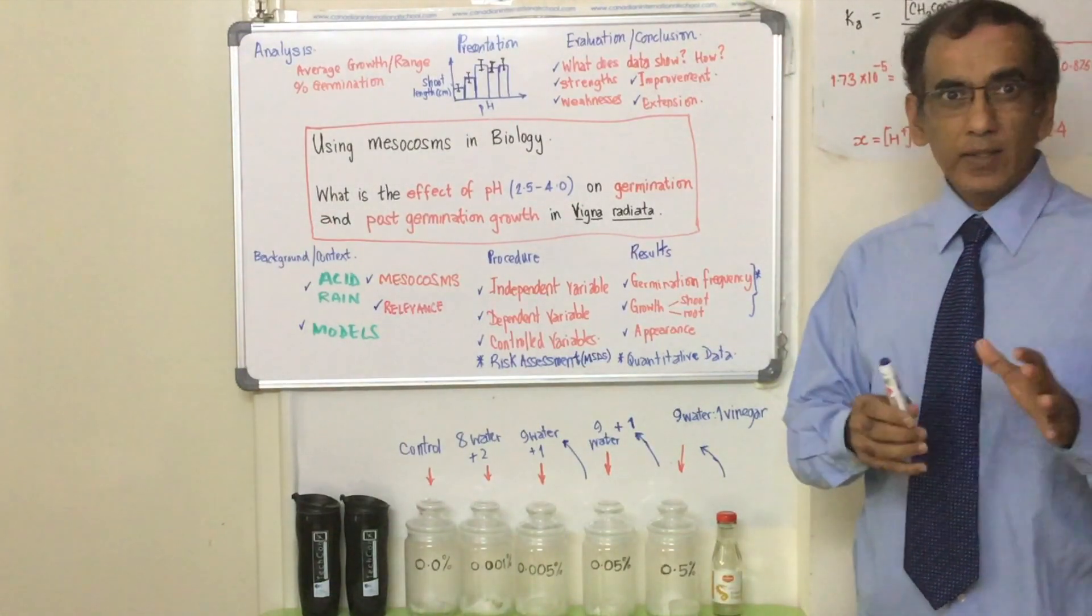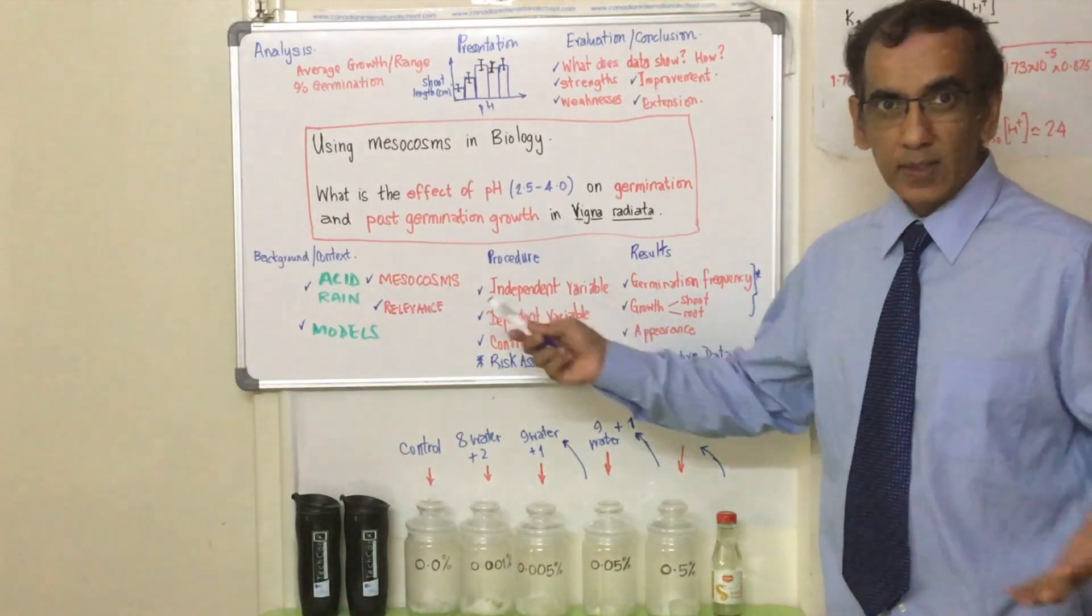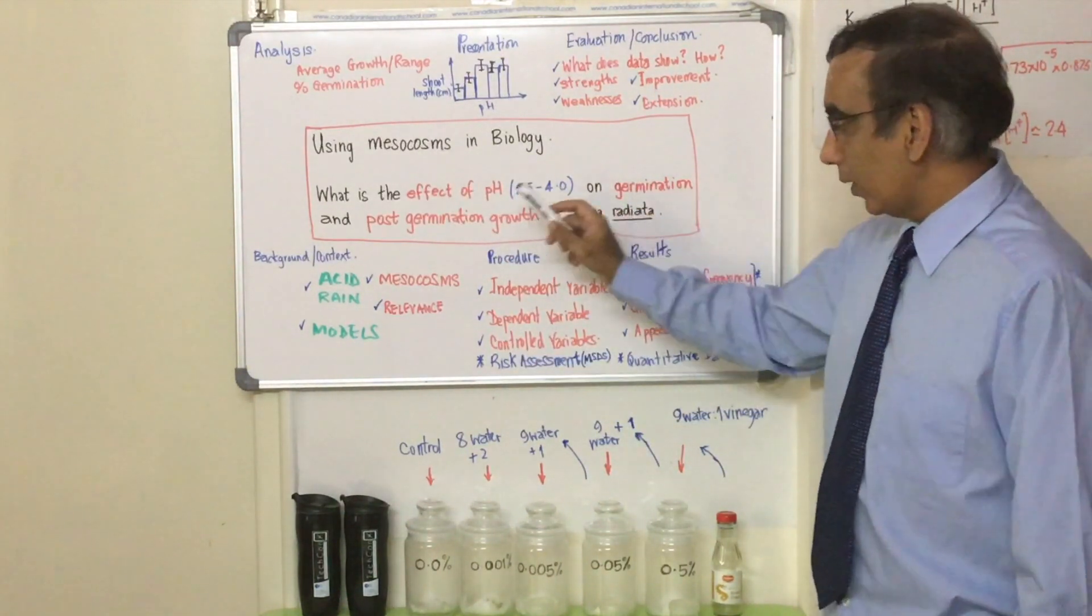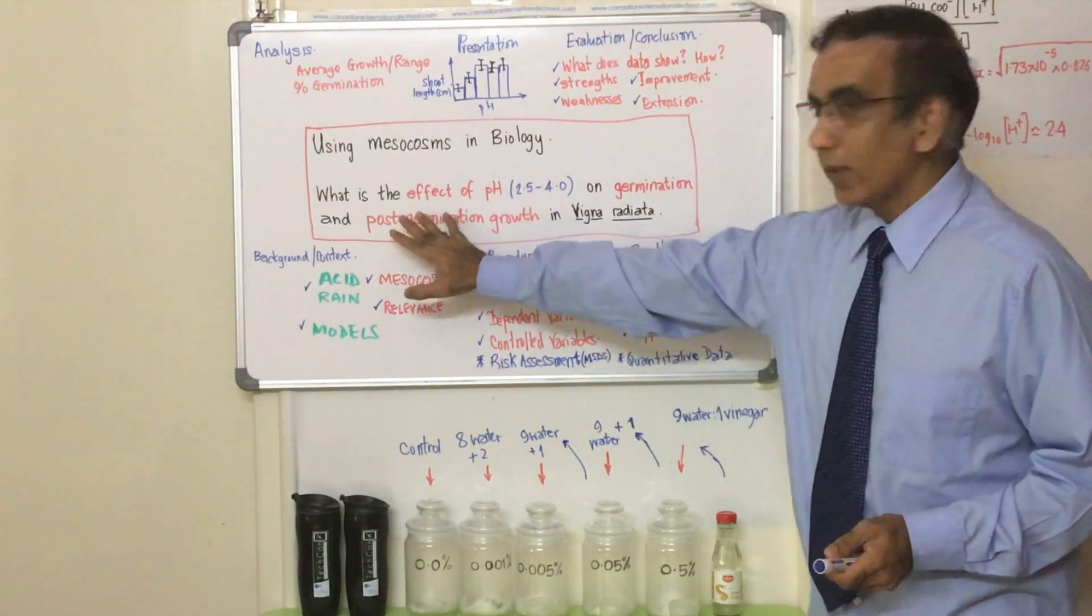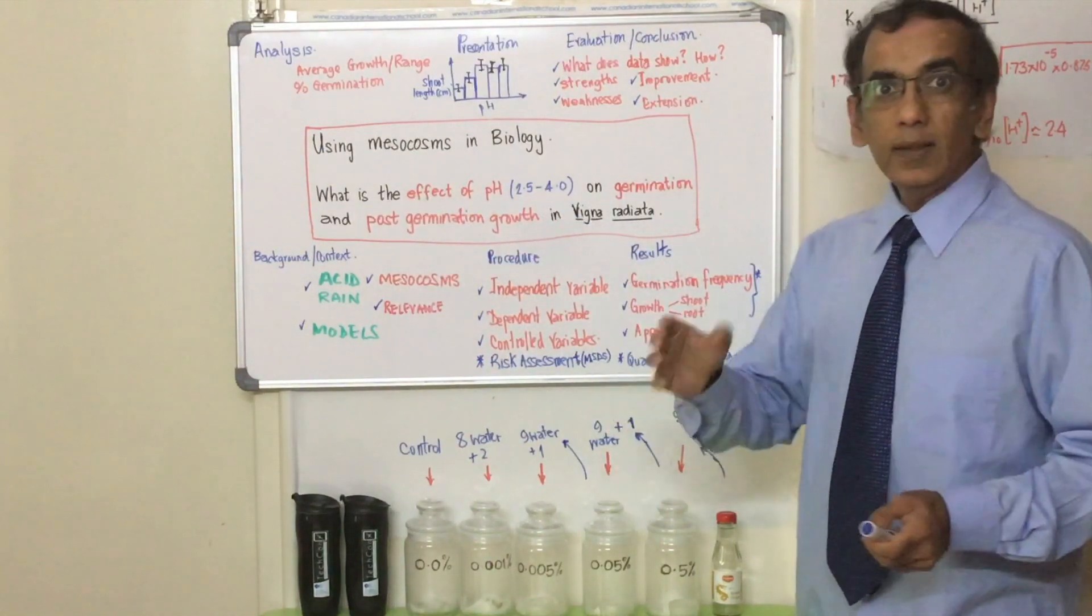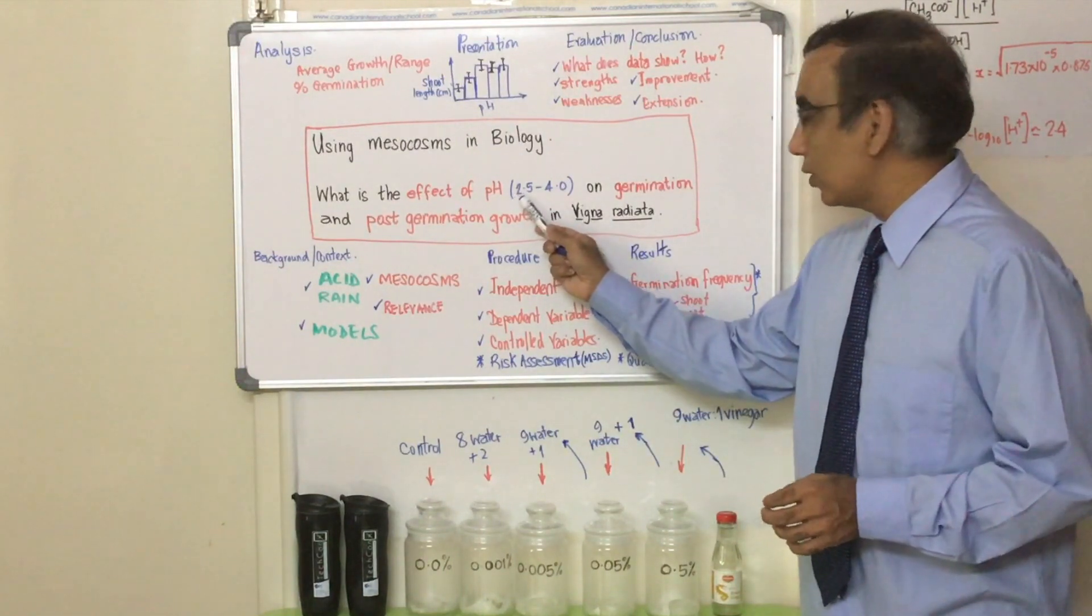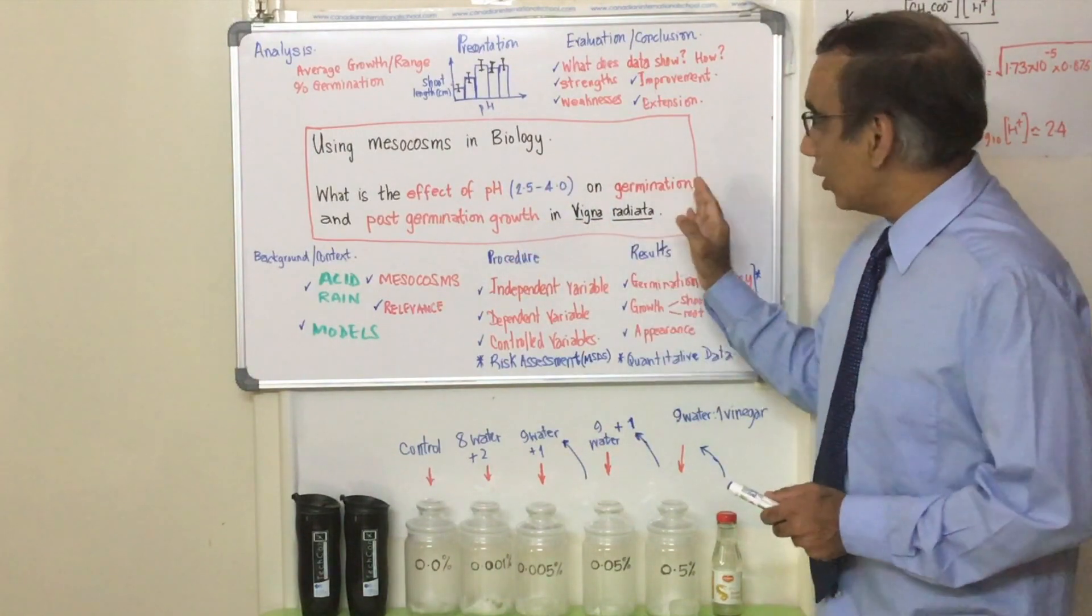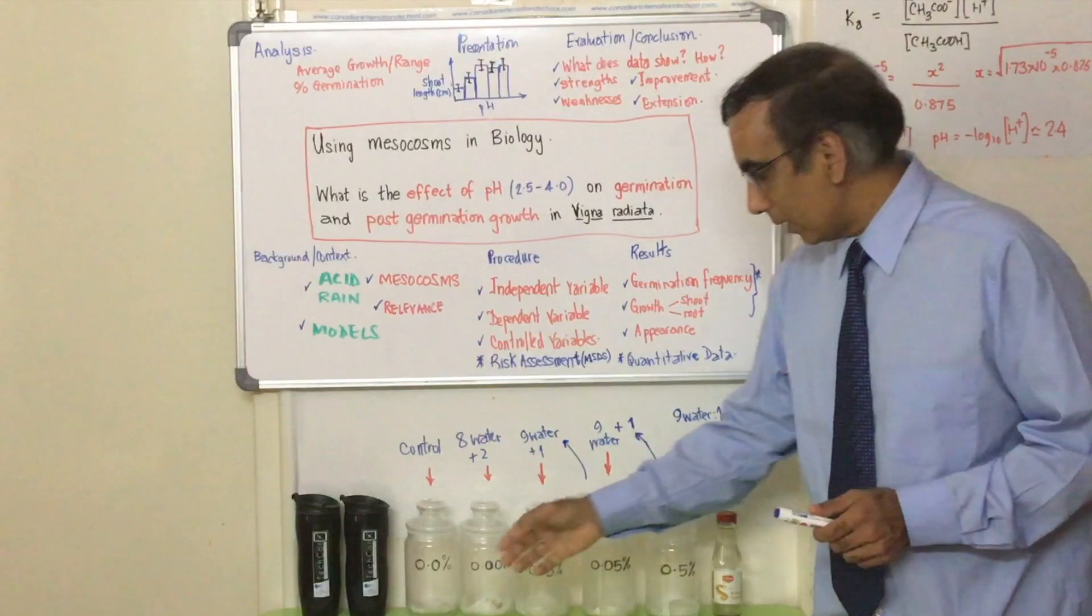Hello and welcome again everyone. Today I wanted to add some more clarity to our investigation on using mesocosms in biology where we want to specify our research question as one that looks like this: What is the effect of pH, and specifically we want to look at a range somewhere between 2.5 and 4.0, on germination and post-germination growth in mung beans?